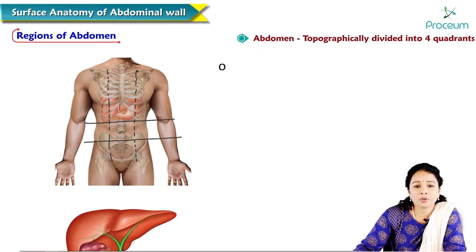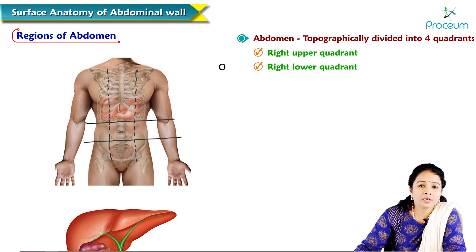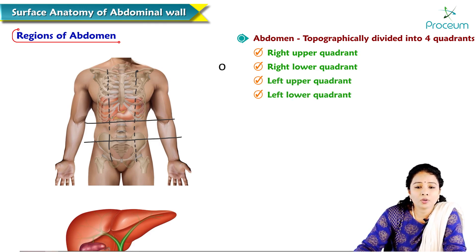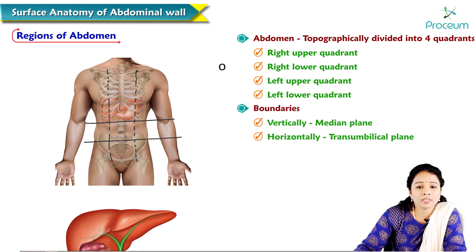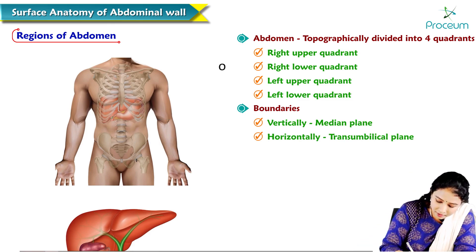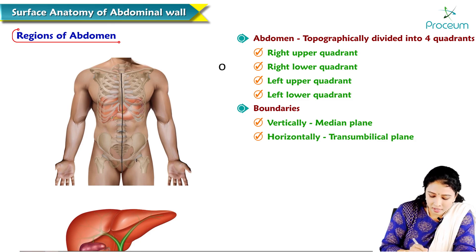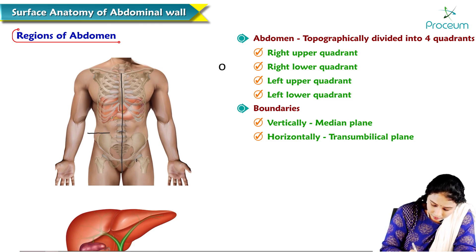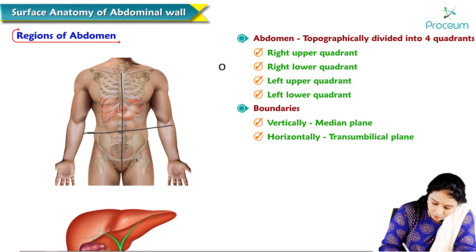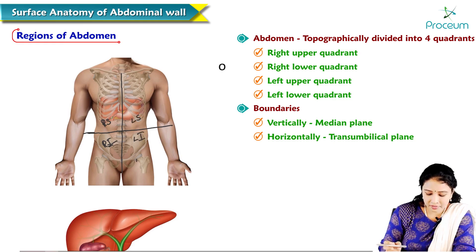The abdomen can also be topographically divided into 4 quadrants: the right upper quadrant, right lower quadrant, left upper quadrant, and left lower quadrant. These quadrants are bounded vertically by the median plane and horizontally by the transumbilical plane, dividing the abdomen into right superior, right inferior, left superior, and left inferior quadrants.